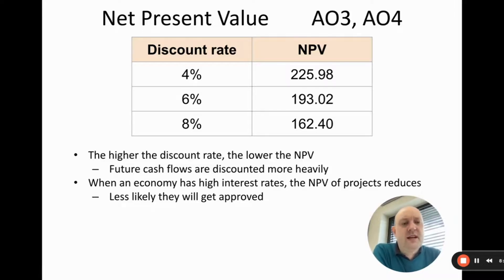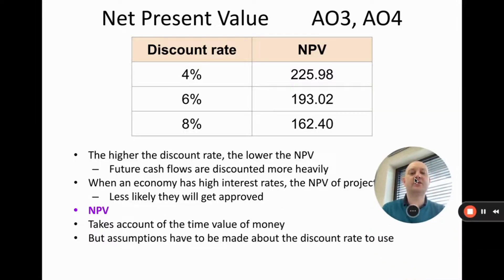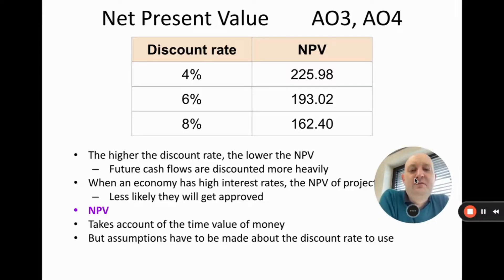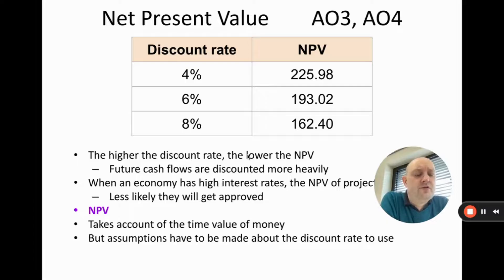In conclusion, NPV takes account of the time value of money. However, the problem is that assumptions have to be made about which discount rate to use — four percent, six percent, eight percent — and we never know exactly what the future holds. Interest rates and inflation can go up or down, so the choice of discount rate is one of the key limitations.